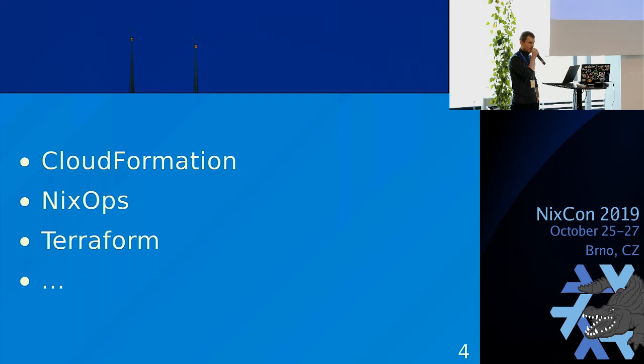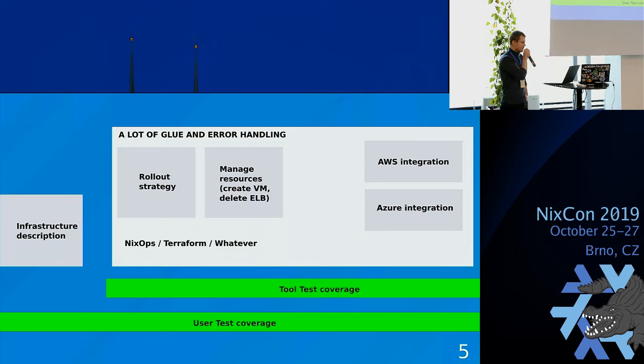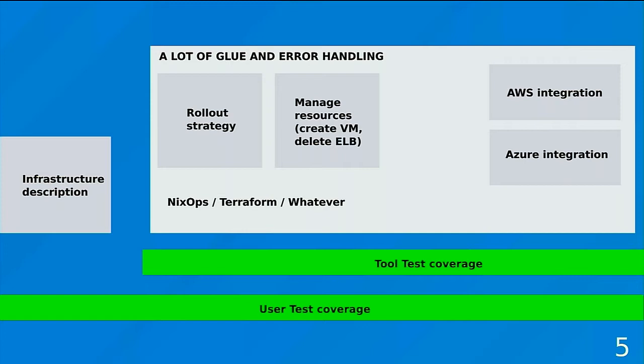And they have some issues. The big gray box is just a tool, and it has fixed logic for quite a few components. For me, especially the rollout or deploy strategy, which is hardcoded into those tools, is really, really bad.